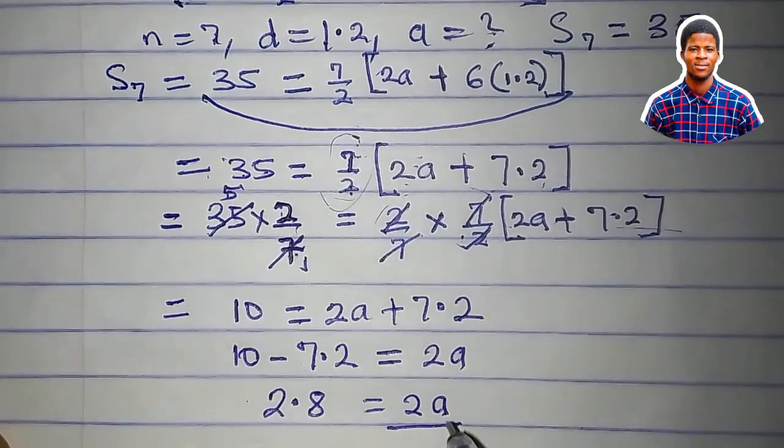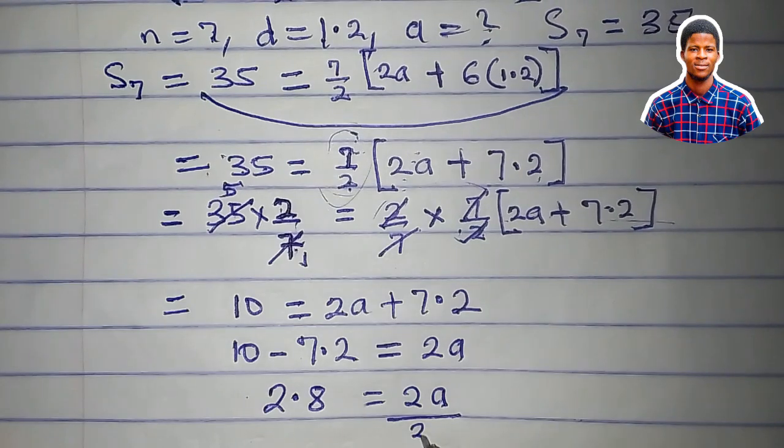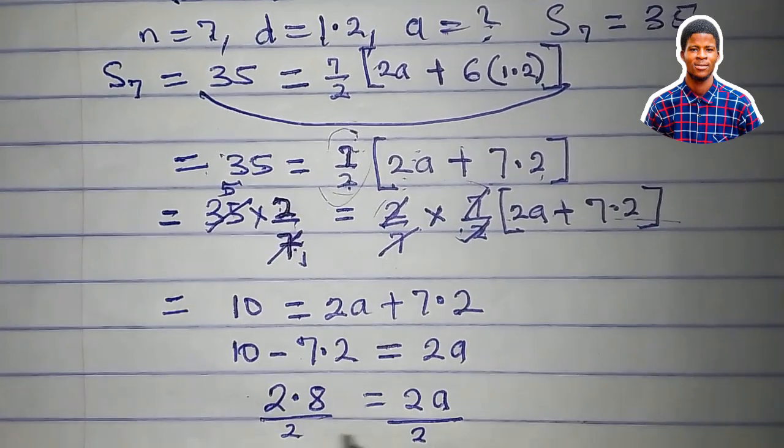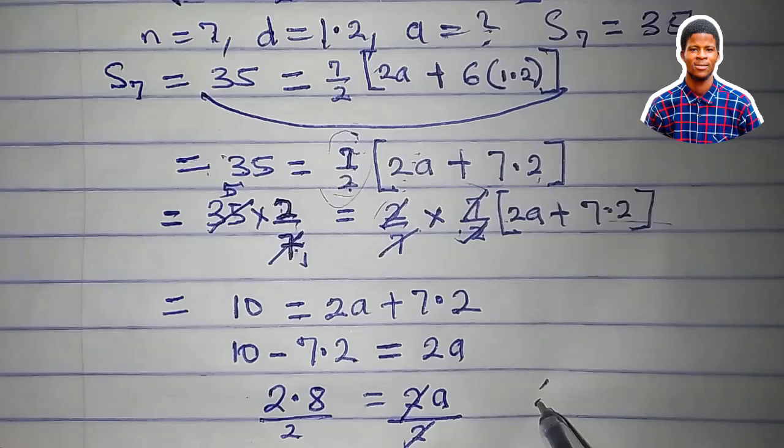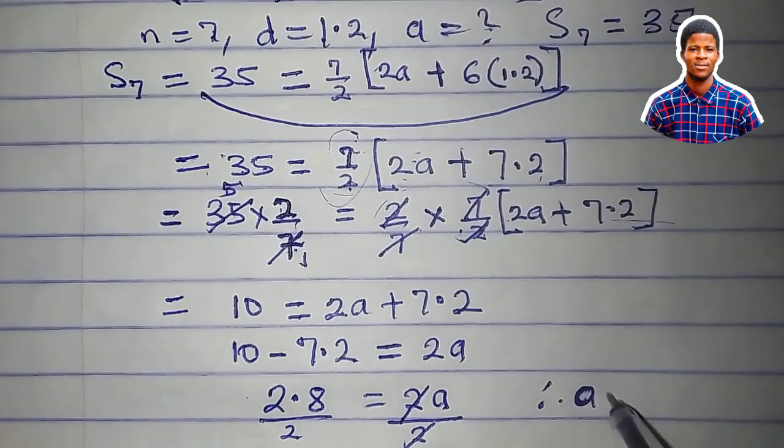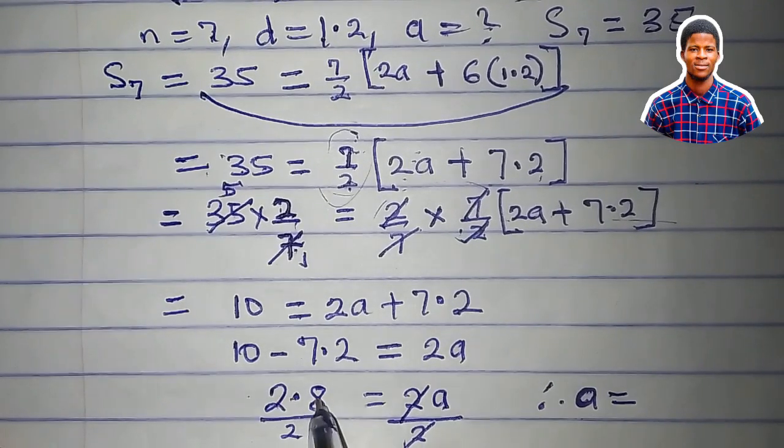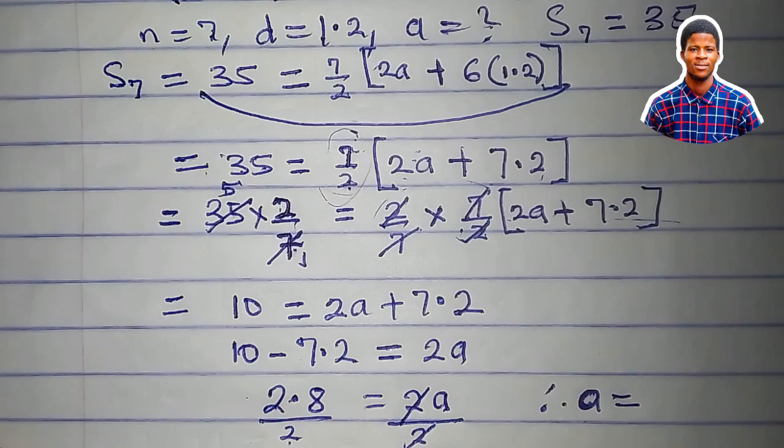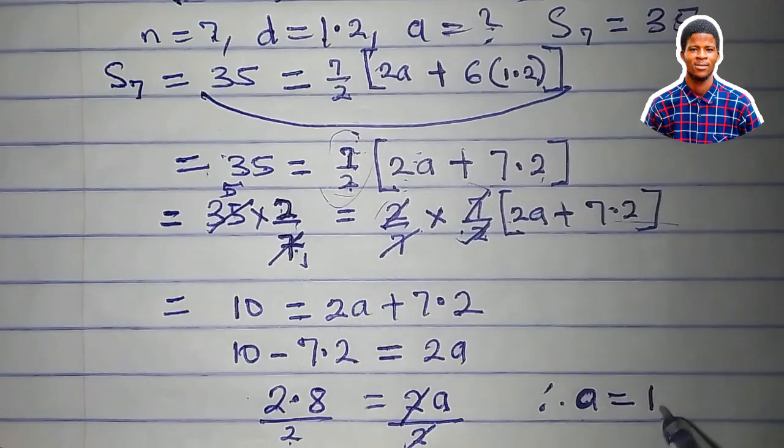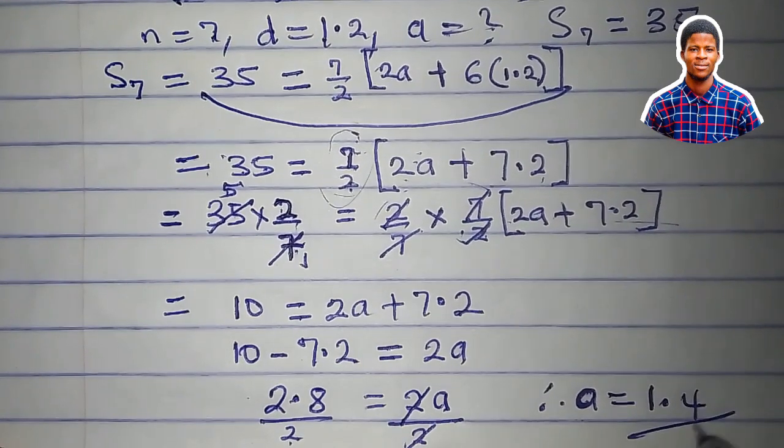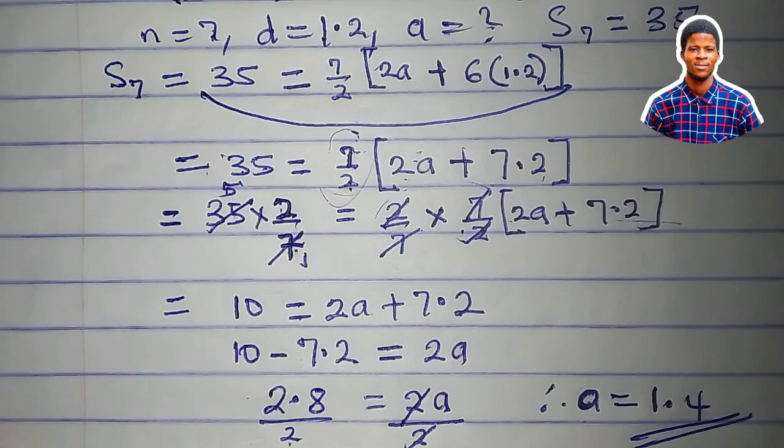So dividing both sides by 2, 2 cancels 2, it means that a equals 2.8 over 2, and that's equal to 1.4. So the first term of the series is 1.4.